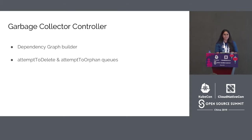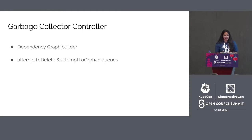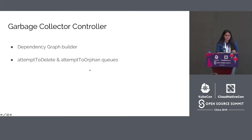The garbage collector controller is responsible for deleting deployments and their components. It scans for unused and unowned objects based on dependencies, marks them for deletion, and deletes them. The garbage collector runs reflectors to watch for changes of managed objects, funnels the results to a dependency graph builder which builds a graph caching dependencies among objects. The dependency graph builder enqueues objects to an attempt-to-delete queue or attempt-to-orphan queue, and garbage collector workers consume these queues and send requests to the API server to update or delete objects accordingly.